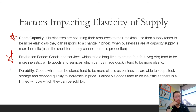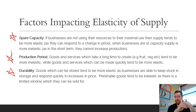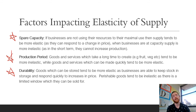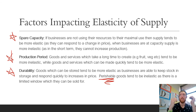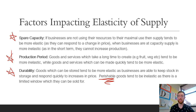Lastly, durability — goods and services which can be stored tend to be more elastic, as businesses can keep stock in storage and respond quickly to increases in price. Canned goods like baked beans or honey, which lasts forever in storage, can be more elastic because businesses can push them out to stores and sell them when prices change. Whereas perishable goods tend to be inelastic — you can't store bananas and wait for the price to improve because they'll go brown and moldy, so businesses must accept whatever price they can get.